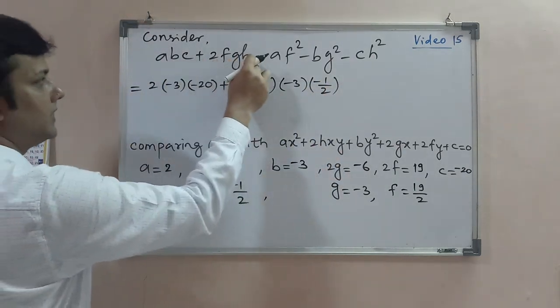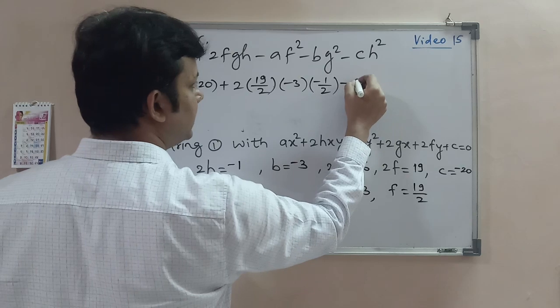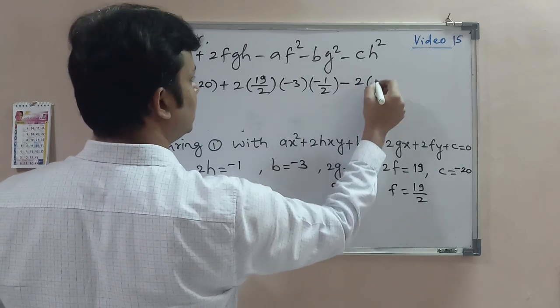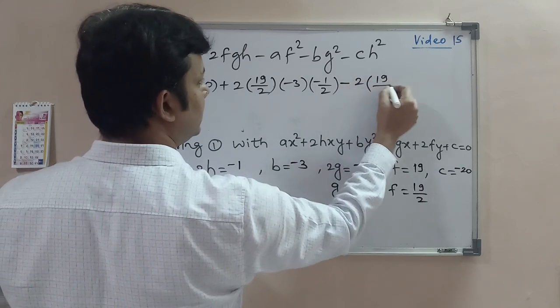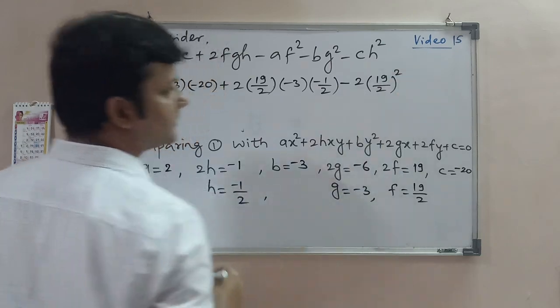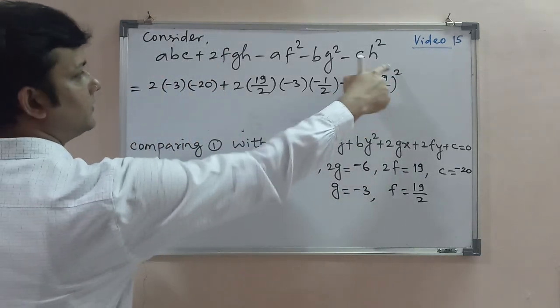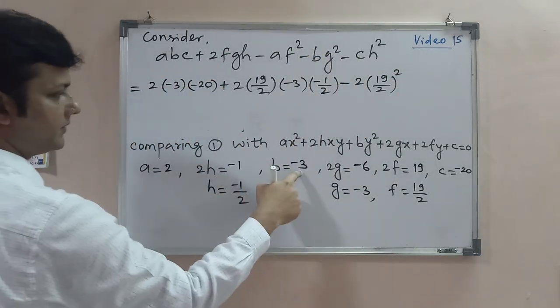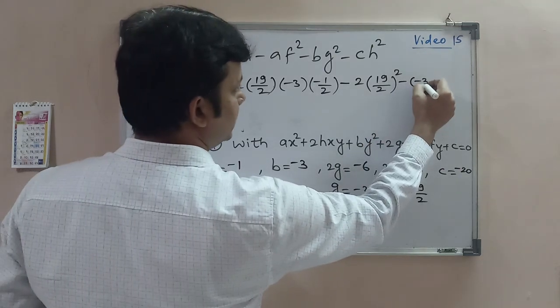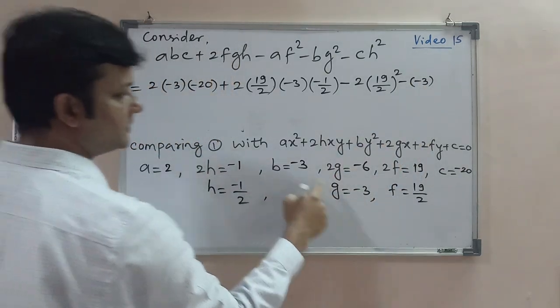Here we have 2fgh minus af². a is 2, f is 19/2, so this is 2 times (19/2)². Minus bg²: b is -3, g is -3.